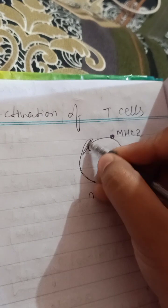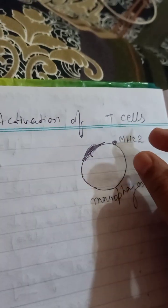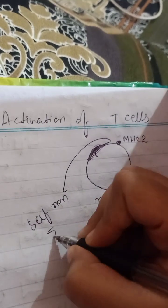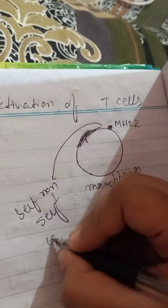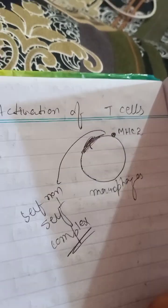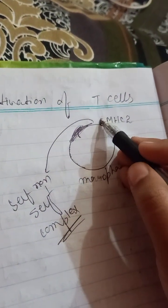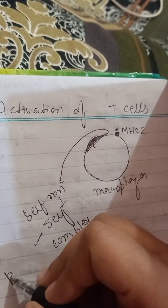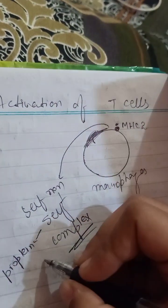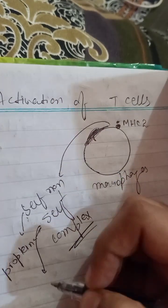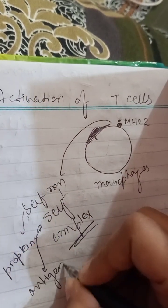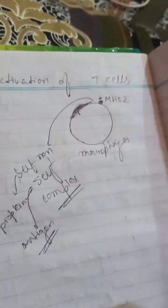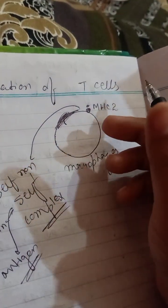Before that, we are calling it the self and non-self complex. After attaching the antigen on the cell surface, it will represent the antigen as a self complex — the protein and non-self protein and self complex. That is what we are calling the antigen. So the APC, which means antigen presenting cell, will be active.